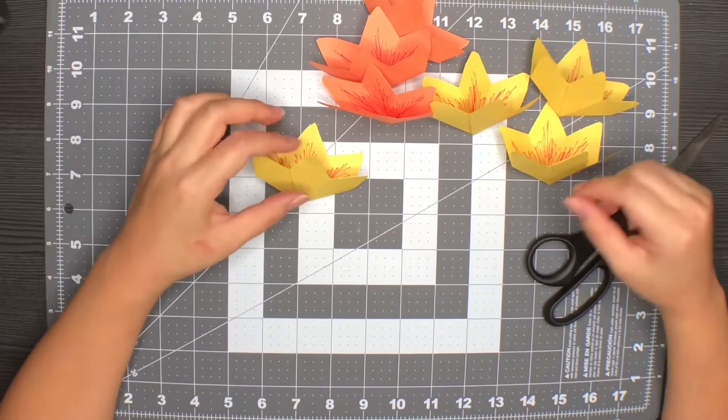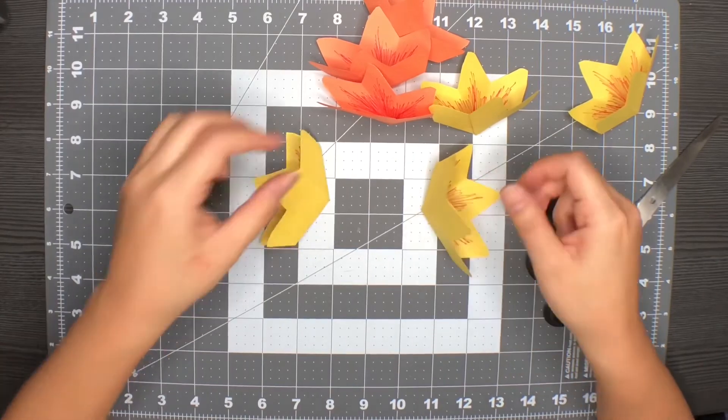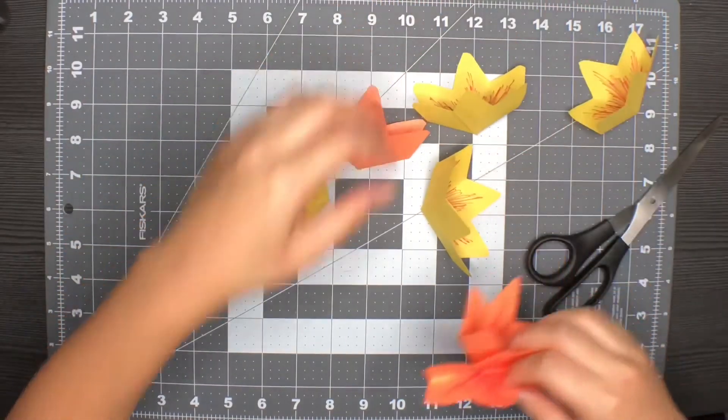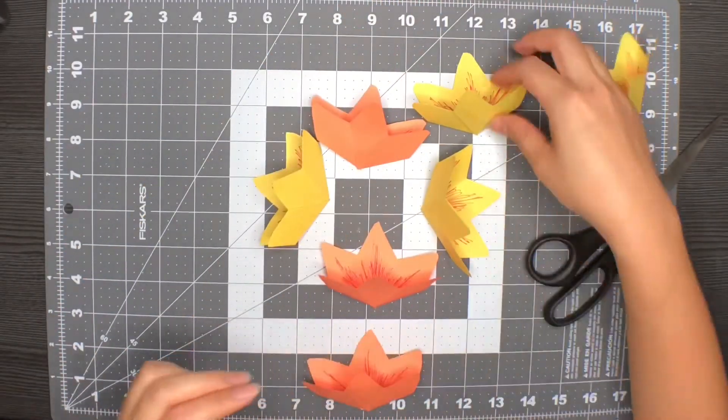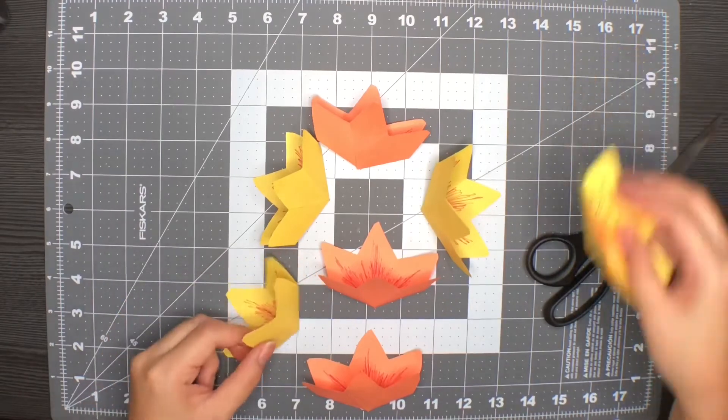Before gluing the flowers together, we will arrange them in the pattern that they need to be attached. You will have 1 at top, 2 on the side, 1 in the center, 2 at the side, and 1 at the bottom.